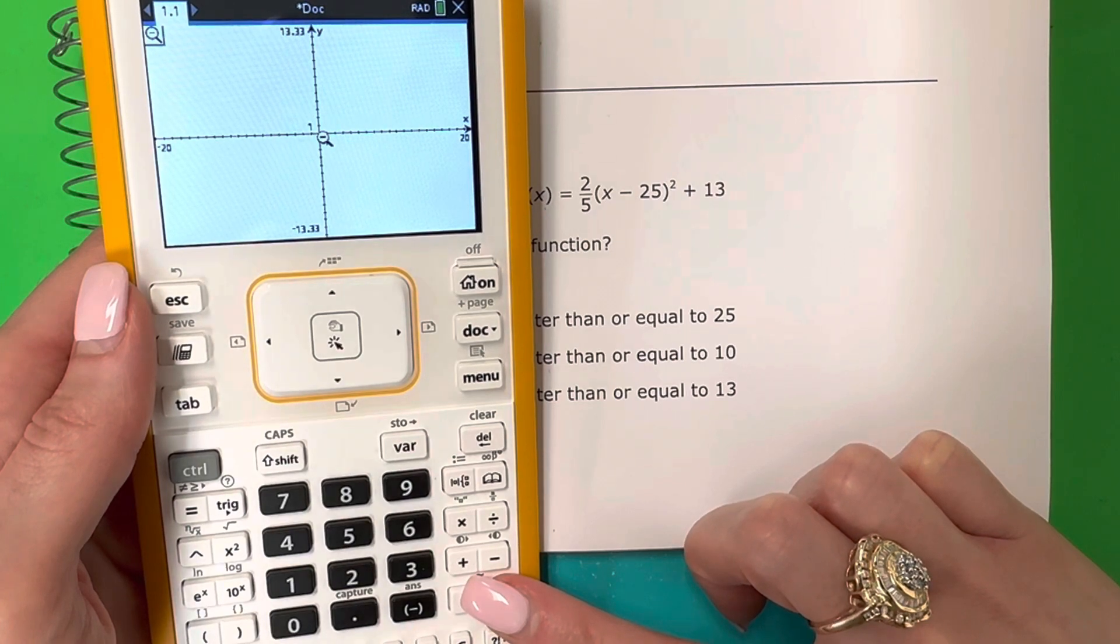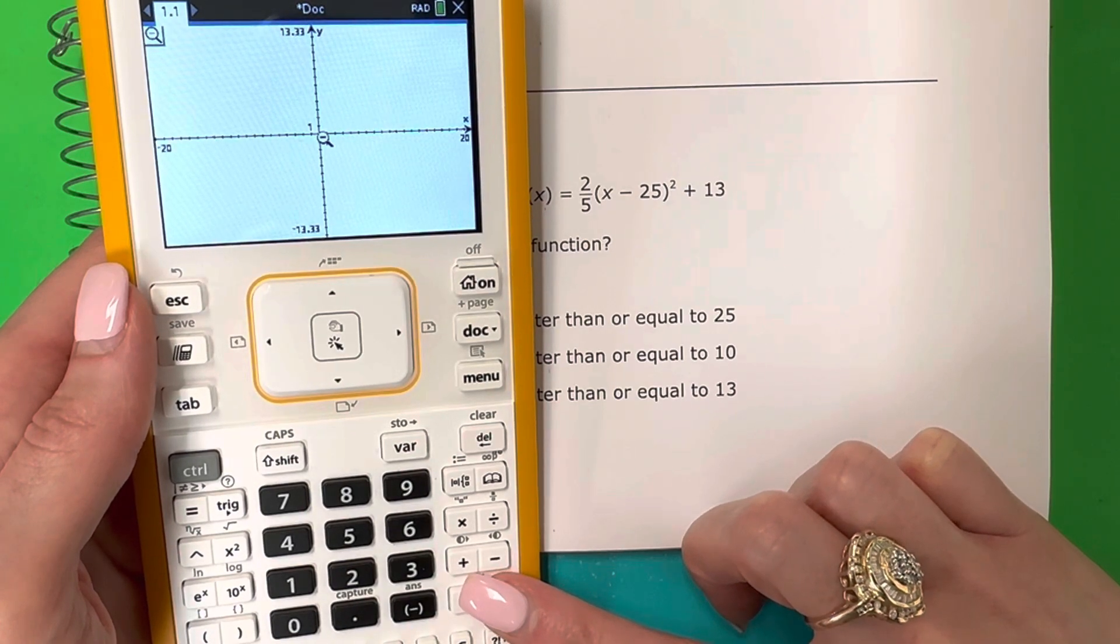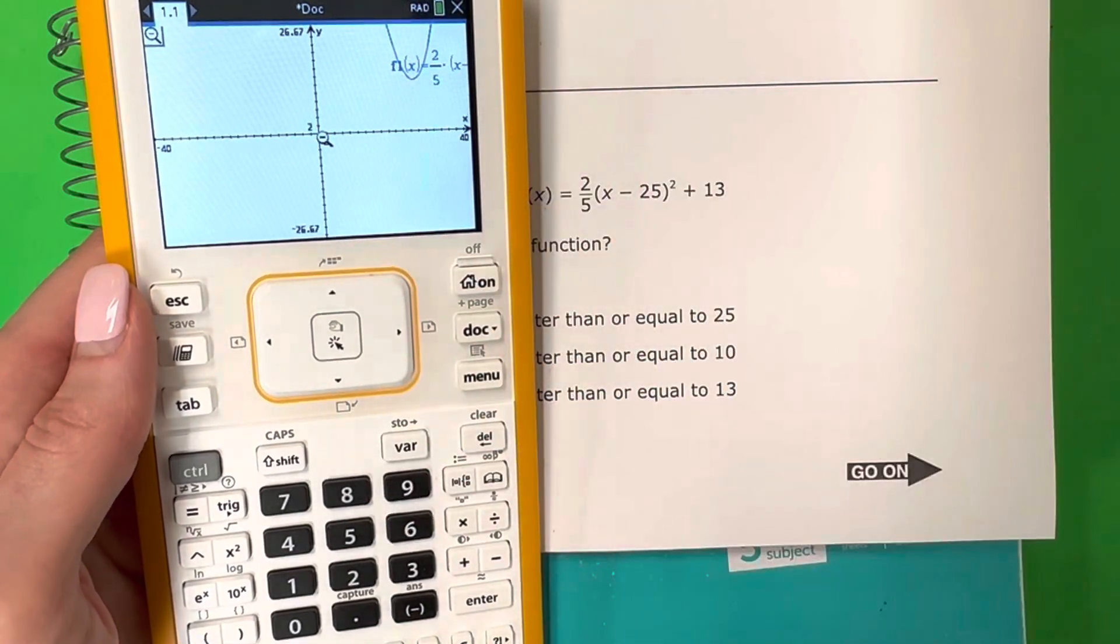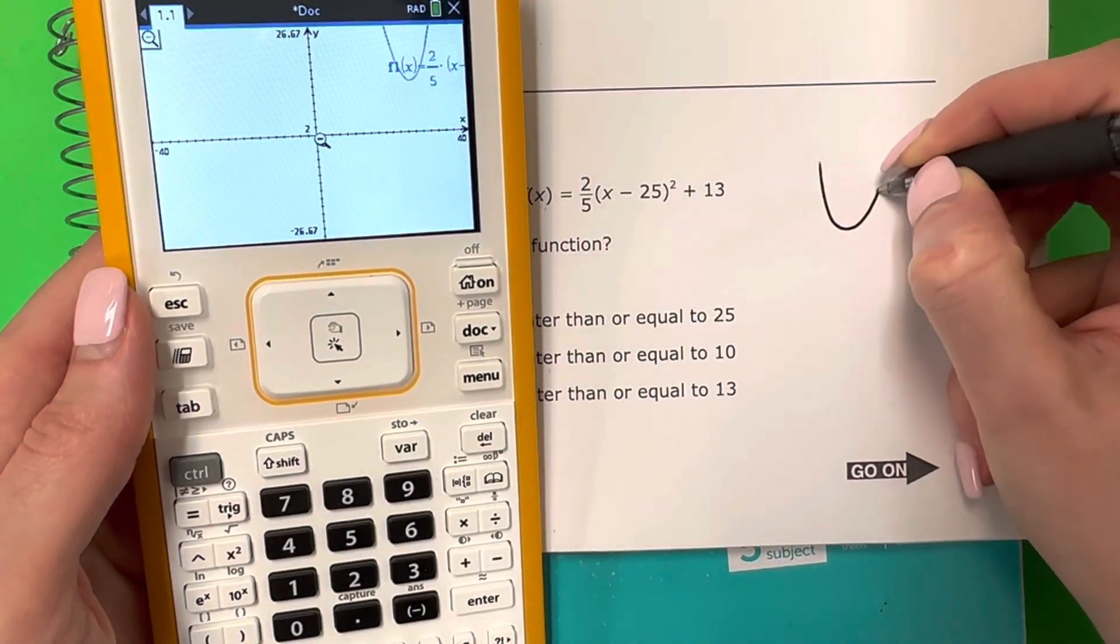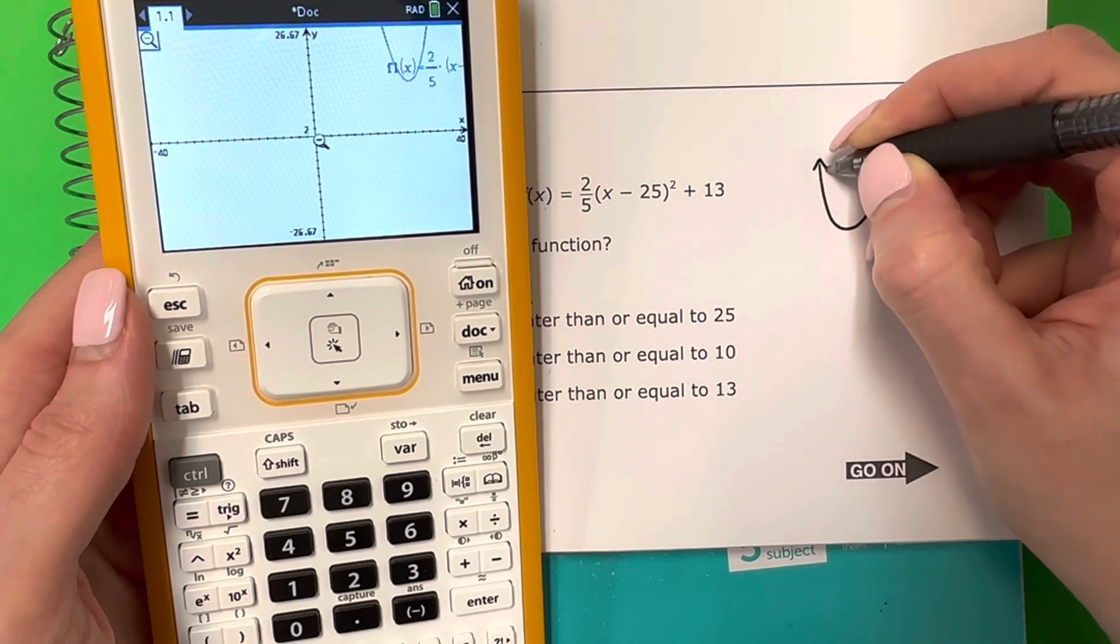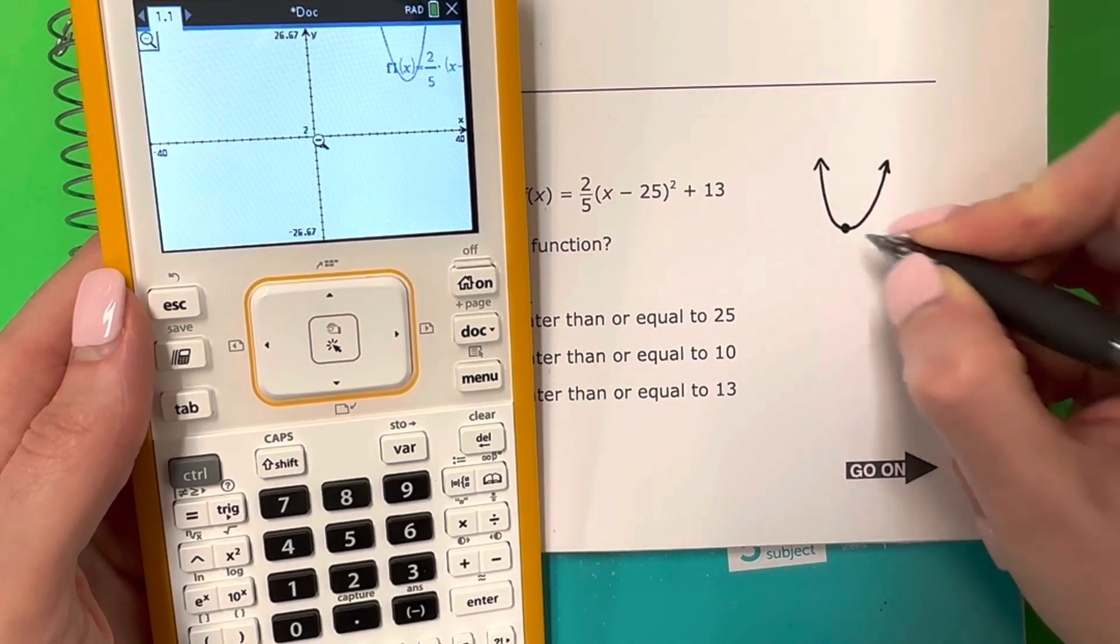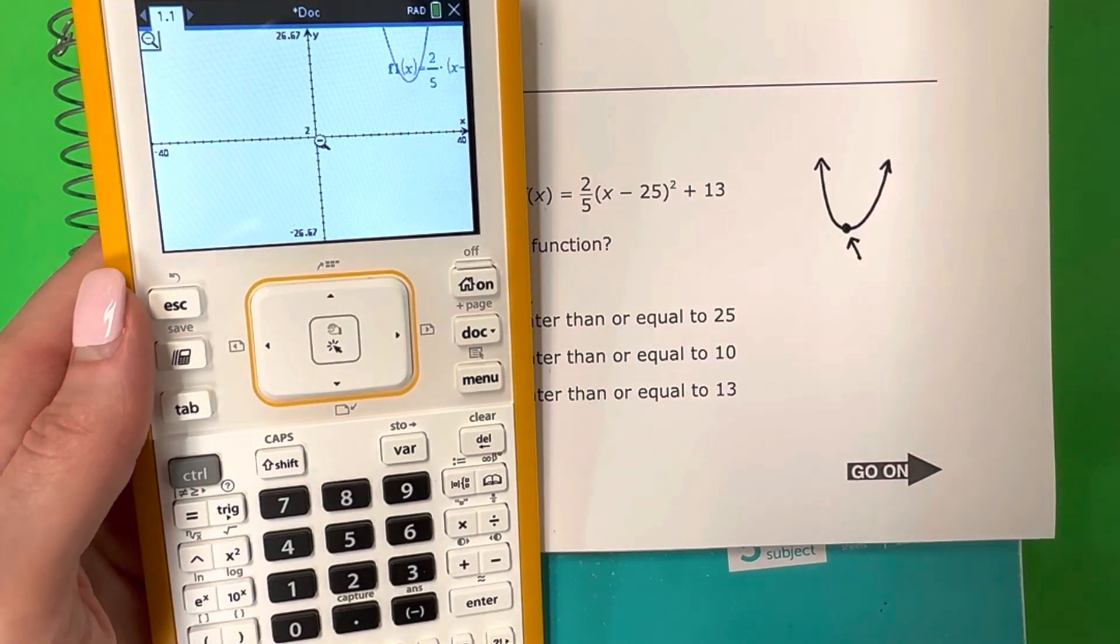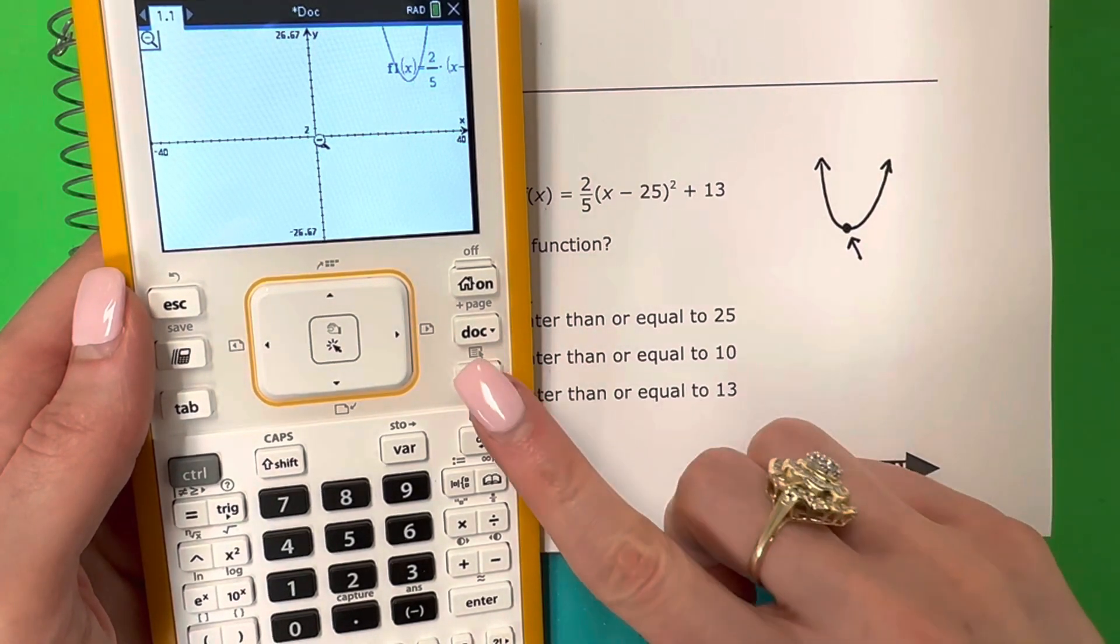So enter. I see nothing. Let me go ahead and push enter again. There we go. I see something, and it looks kind of like this. Let's go ahead and find the vertex of that, so that is the center point.